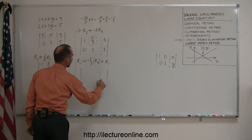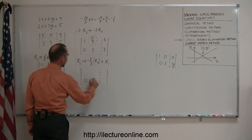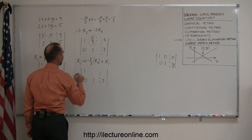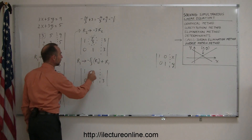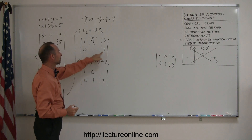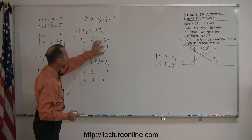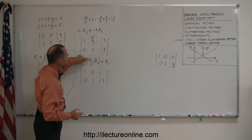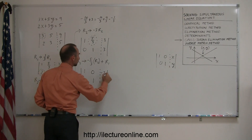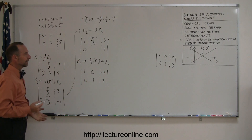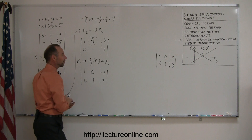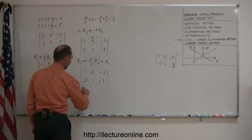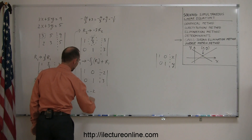If we do that: the second row does not change — 0, 1, and 3. In the first row, the 1 will not change. Taking 1 times negative 5 over 3, that's negative 5 over 3, added to positive 5 over 3 gives me 0. Then multiplying 3 by negative 5 over 3 — notice the 3s cancel out — giving negative 5, added to positive 3 gives negative 2. Now I'm done, because I have 1, 0 and 0, 1 on the left side. So x equals negative 2 and y equals positive 3.